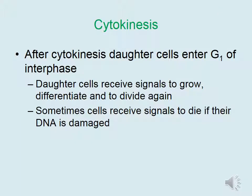Remember the cell cycle discussed at the beginning of this lecture. After cytokinesis, daughter cells enter G1 of interphase. During G1, daughter cells receive signals to grow, differentiate, and to divide again. However, sometimes cells receive signals to die if their DNA is too damaged.